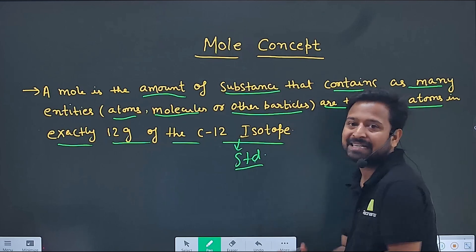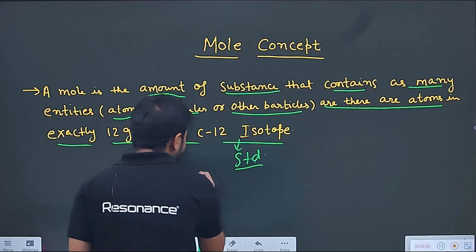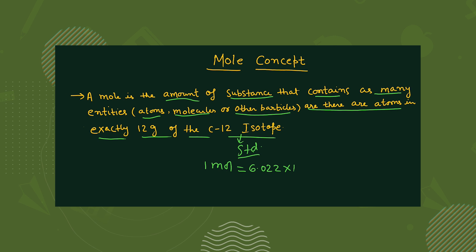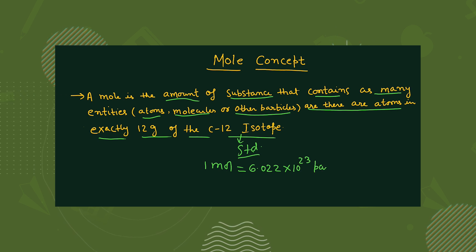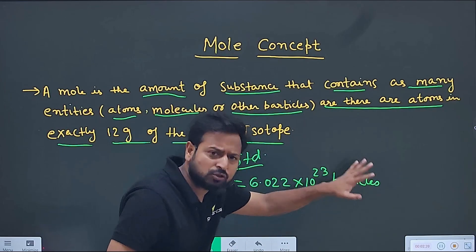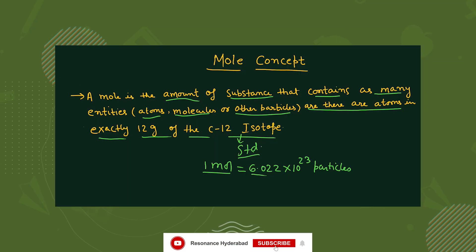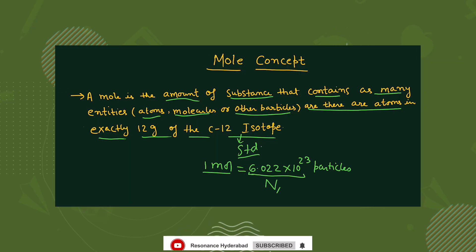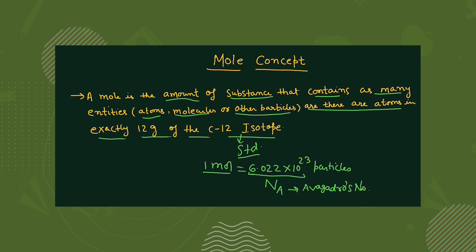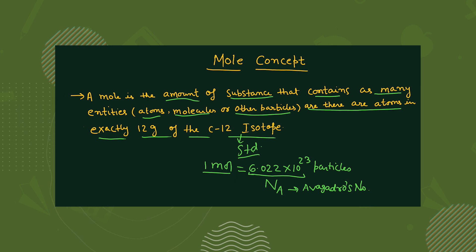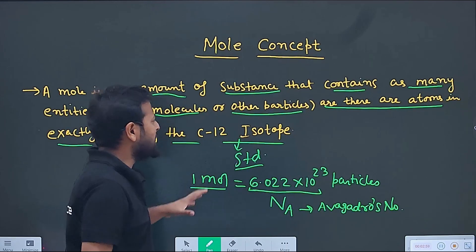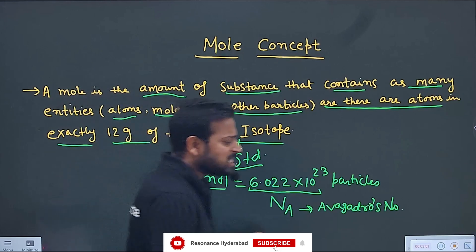One mole is also having 6.022 × 10²³ — that's why carbon-12 is taken as the standard, and it is valid for everything. So, one mole equals 6.022 × 10²³ particles. The particles may be atoms, ions, or molecules. This is represented by Nₐ and is called Avogadro's number, given by a scientist in his honor.